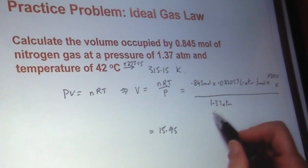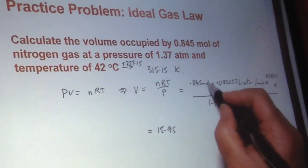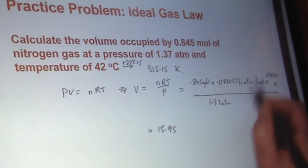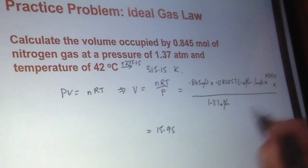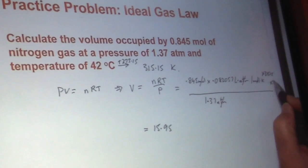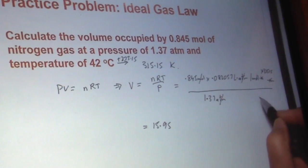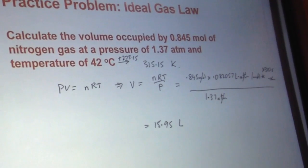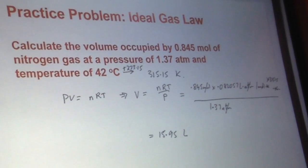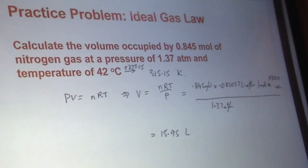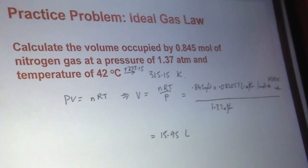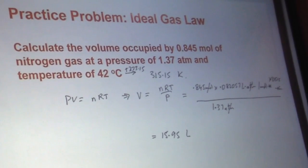If we look at dimensions, we see we have moles cancelled here and here. We have atmosphere cancelled here and here. We have Kelvin cancelled here and here. So anything that's left is liters, just as we expect, because we are asked for volume. So this is one of the easier ones.